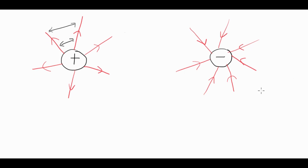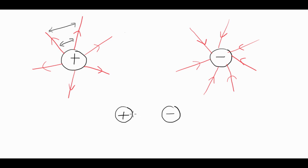If we put two charges together then they behave very similar to the way that a north and south pole will behave with two magnets. Unlike charges will attract, and the electric field lines will move out from the positive charge and in towards the negative charge, giving a situation that looks like this.